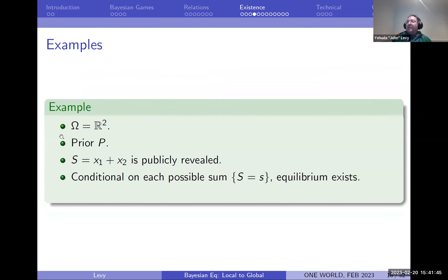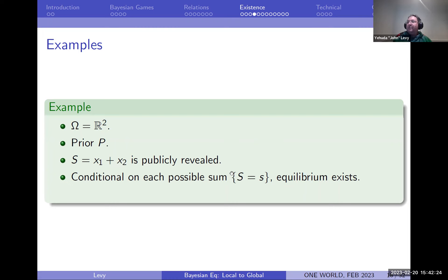Going back to the general setting: imagine the state space is R^2 with some prior, and what's publicly revealed is the sum of those two coordinates — two people sharing a pot of money and the total amount is revealed, but they may have some additional belief about how it's split. Conditional on each possible sum, equilibrium exists. The function giving the sum makes this common knowledge relationship smooth, and therefore I can piece it all together and say equilibrium exists.